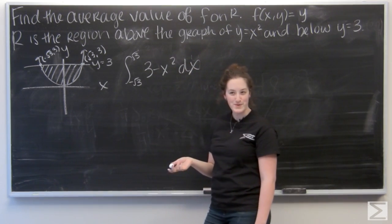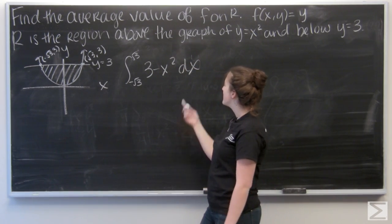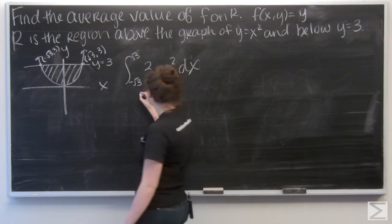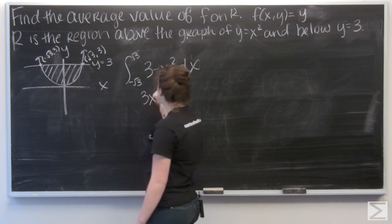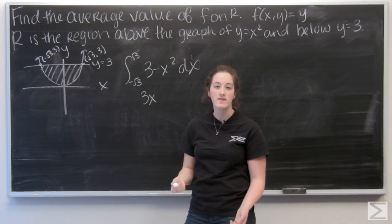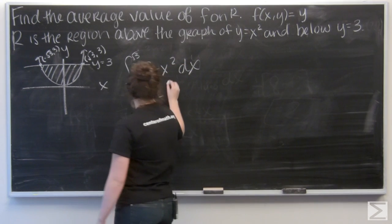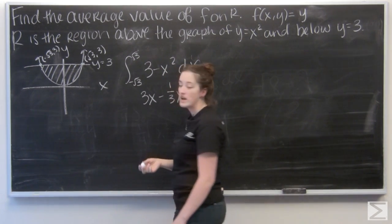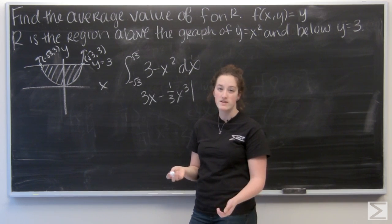This is a nice change from all the multivariable integrations. So I'm integrating with respect to x. Integral of 3 is going to be 3x, and integral of negative x squared is going to be negative 1 third x to the third. And then I'm evaluating that from negative root 3 to positive root 3.